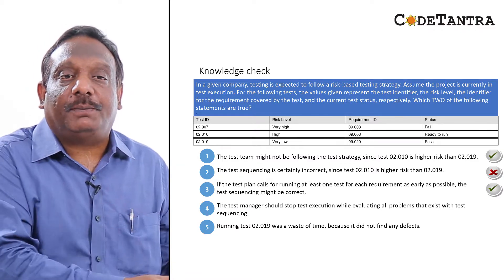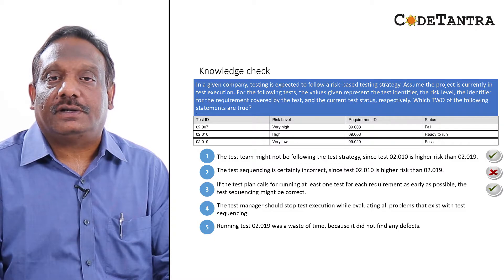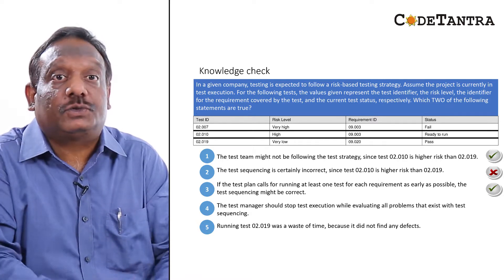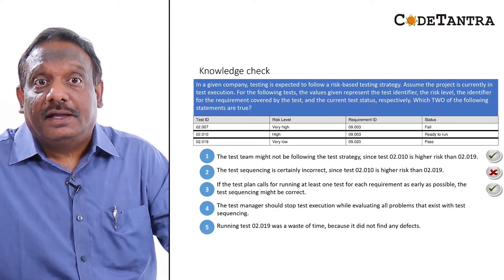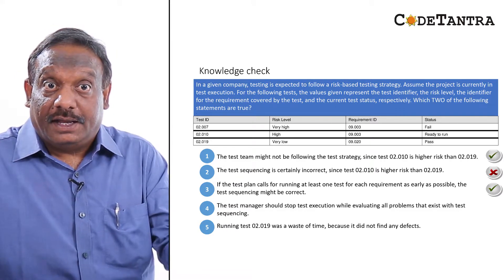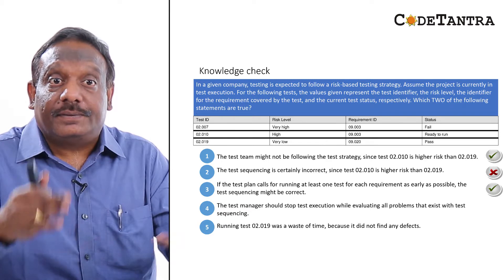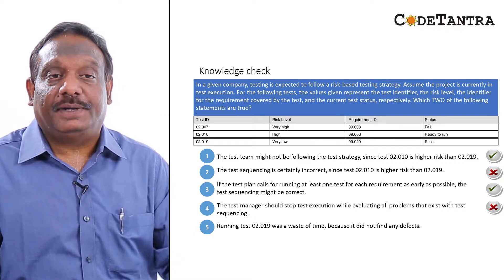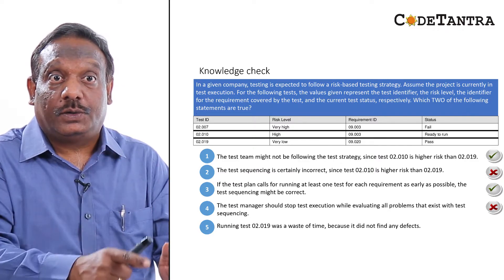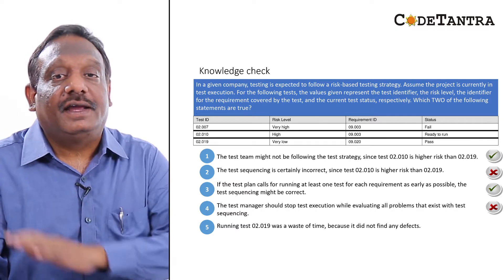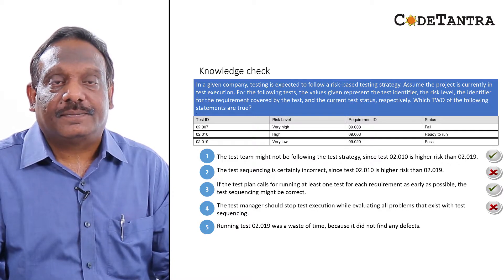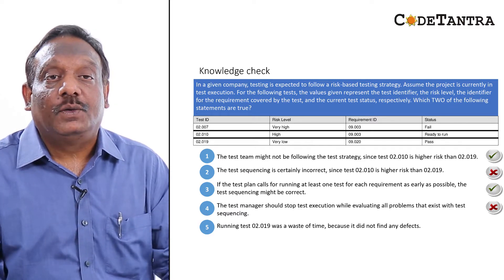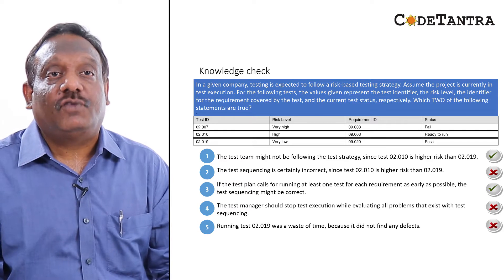Statement four says the test manager should stop test execution while evaluating all sequencing problems. That is incorrect — there is nothing fundamentally wrong here. The team may not be following the test strategy precisely, but since the sequencing is not certainly incorrect, stopping execution is not warranted. Statement five says running test O2.019 was a waste of time because it did not find any defects. That is also false — a test that reveals no defects is not necessarily a bad or wasted test.